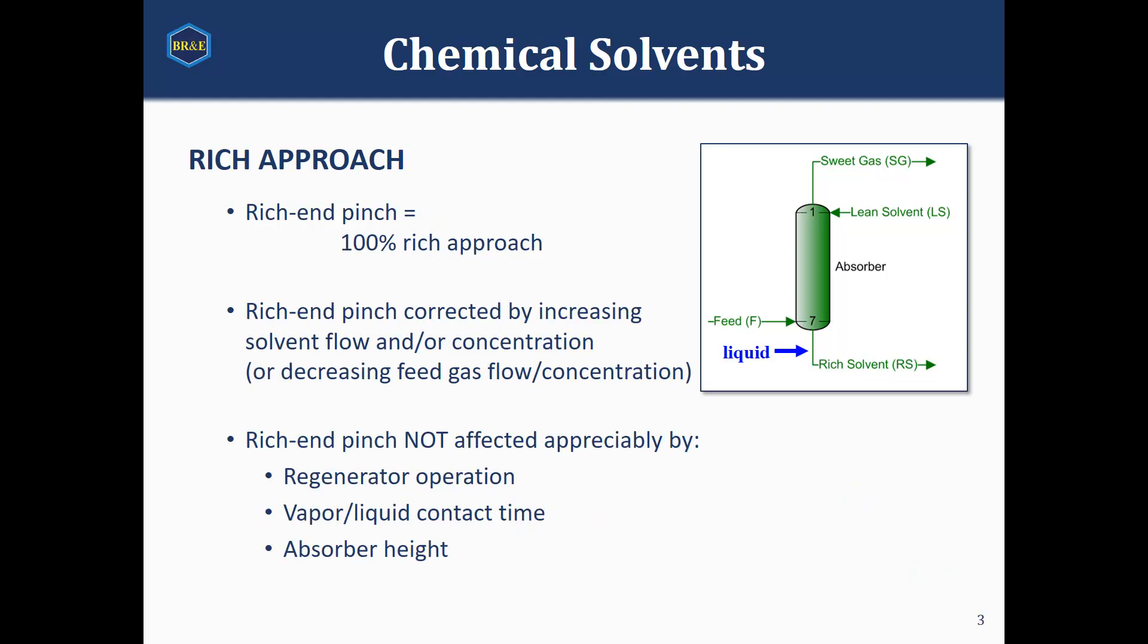If the approach is very high, we'll call this a rich-end-pinch scenario, and in those cases, in order to get the rich approach down, we need to increase how much solvent we flow. We can do that by either increasing our overall flow rate, or by increasing the amine concentration if that's a possibility.